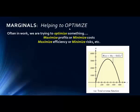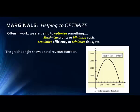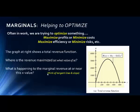One important application is optimization — trying to get the best results, usually by maximizing or minimizing something. For example, maximizing profits by minimizing costs, maximizing factory efficiency, or minimizing downtime. The graph shown here is a total revenue function — a parabola with a maximum value. The optimal value occurs at the vertex.